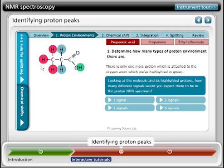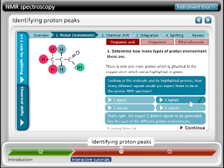How many different signals would we expect in the proton NMR spectrum of propanoic acid? Well, the colors tell me this. I have three different proton environments and I'd expect to see three signals. That's right. Three distinct signals will be generated, one for each of the different proton environments. I've completed that first tutorial. Let's move on to the second one.